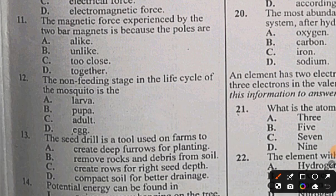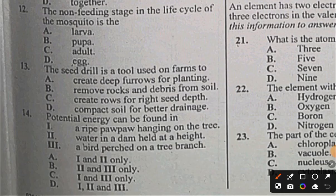Question 13: The seed drill is a tool used on farms to: A) create deep furrows for planting, B) remove rocks and debris from soil, C) create rows for right seed depth, D) compact soil for better drainage. The answer to question 13 is C. Question 14: Potential energy can be found in: I) a ripe purple hanging on a tree - yes, II) water in a dam held at a height - that's also true, III) a bird perched on a tree branch - that's also right. So our answer to question 14 is D.